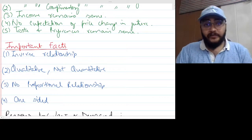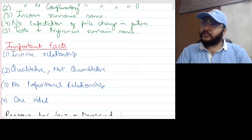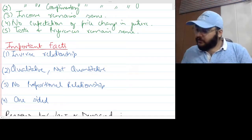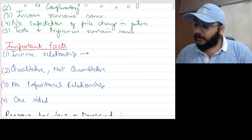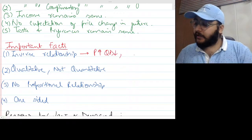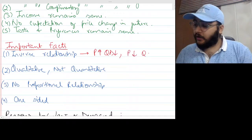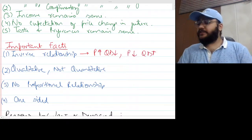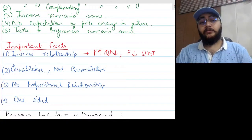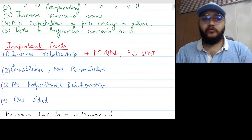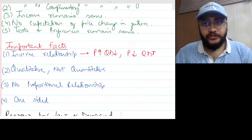Inverse relationship — the simple meaning is: if the price increases, then the quantity demanded will be reduced. If the price is reduced, then the quantity demanded will be increased. Because these two variables are in an inverse relationship with each other.